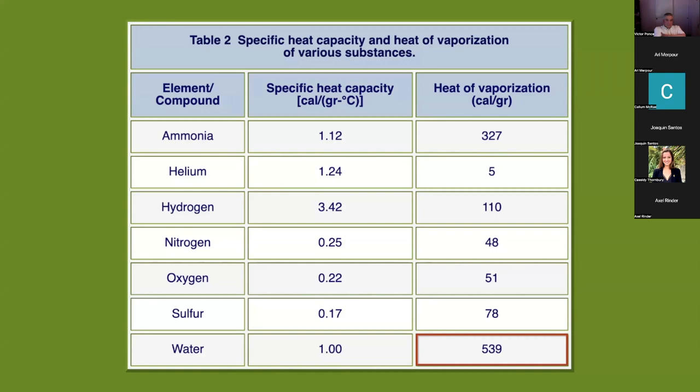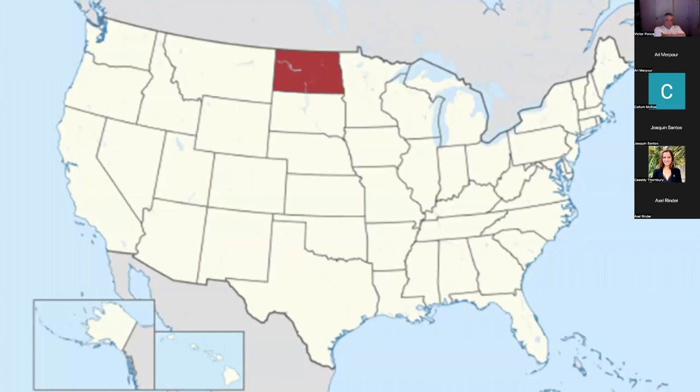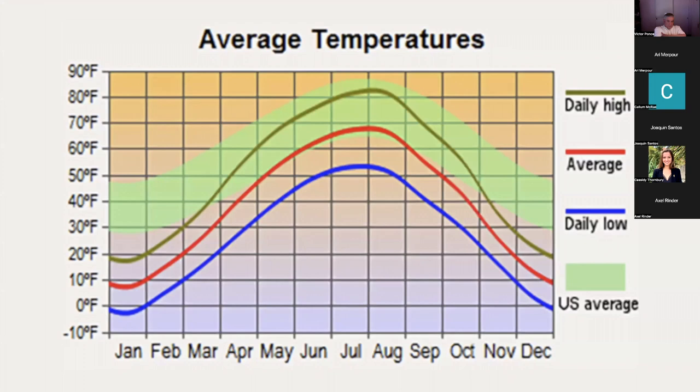This property of water is important for regional climate regulation explaining the marked difference between hyper-oceanic and inland continental climates. For instance, the state of North Dakota with an inland continental climate is subject to more temperature variability between winter and summer than the entire U.S. average which is influenced by hyper-oceanic climates.